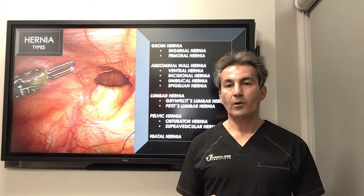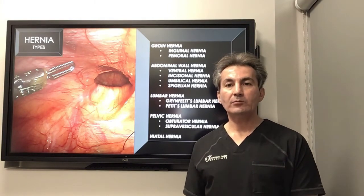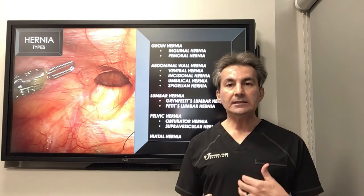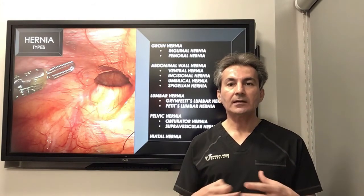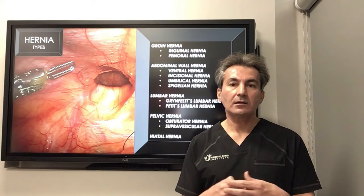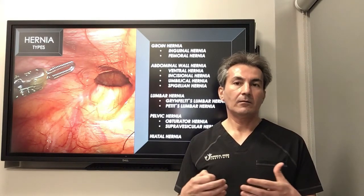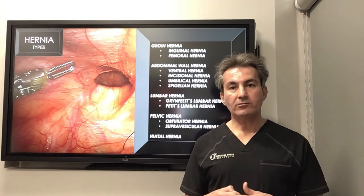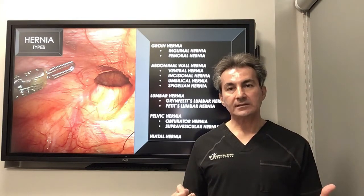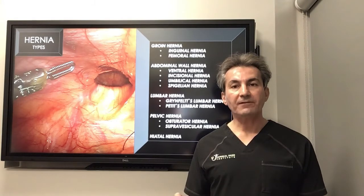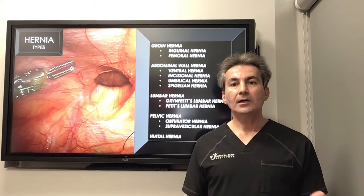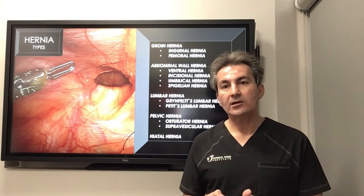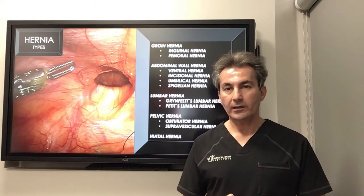You can also have a hernia after any type of surgery. When we cut through the abdominal wall to perform surgery, that incision cannot heal completely in around 10 percent of cases, creating a weakness or defect in the abdominal wall later. This is called an incisional hernia, which is another type of abdominal wall hernia.